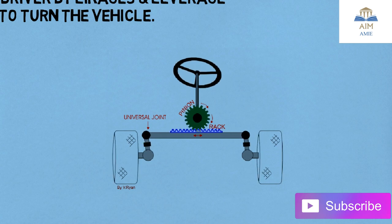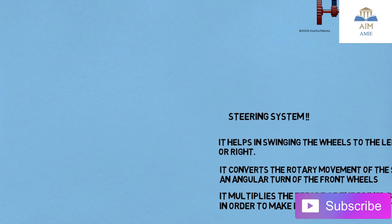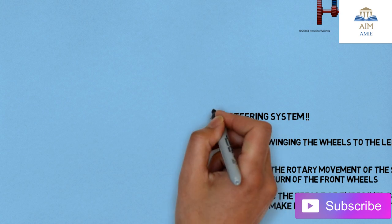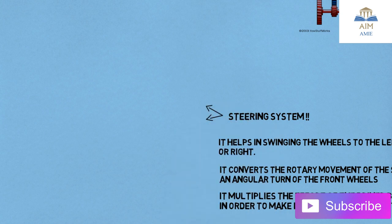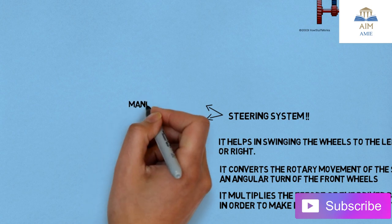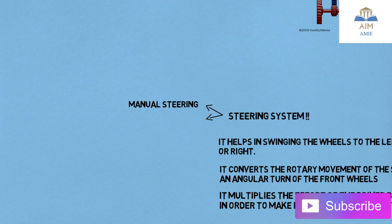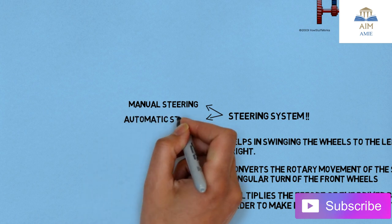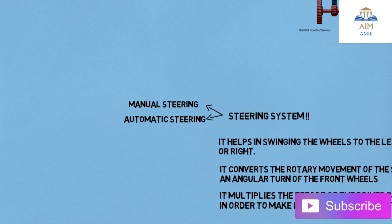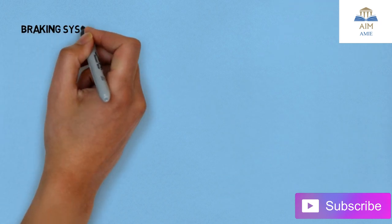Here the rack and pinion kind of steering system is shown. There are two types of steering system — the first one is the manual steering system, which is the conventional one, and the next one is the power steering system. The next system in the automobile which is very important is the braking system.